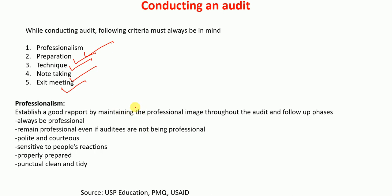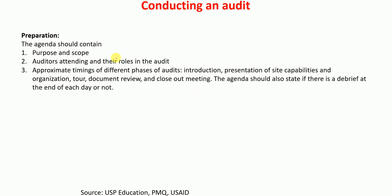Professionalism means that auditors should establish a good rapport by maintaining their professional image throughout the audit process and follow-up phases. They should remain professional even if the auditees are not being professional. The auditor should be polite, courageous, and sensitive to people's reactions, properly prepared, punctual, clean, and tidy. Regarding preparation, the agenda should always contain the purpose and scope, the auditors attending, and the roles of different auditors in the audit process.